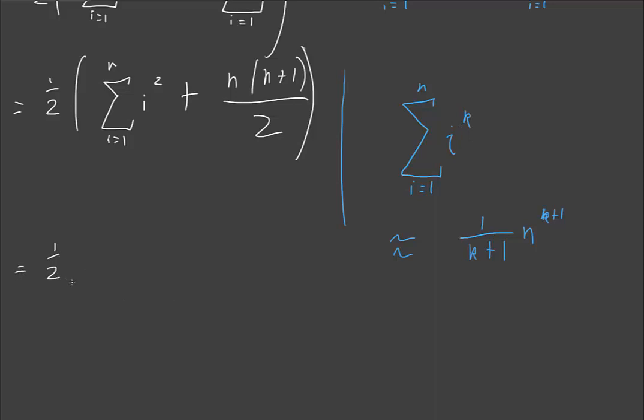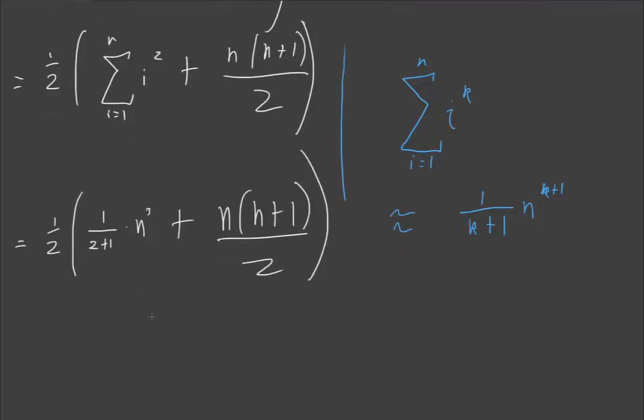Now if we expand this out, what we get is one half times, so this whole thing becomes 1 over, now k is 2 in our case, 2 plus 1, times n to the power of 2 plus 1 is 3, so times n to the power of 3. That's our expanded this term, plus n times n plus 1 over 2. Now we've gotten rid of all of our sum notation, we've got the entire thing purely in terms of n, which is happy days.